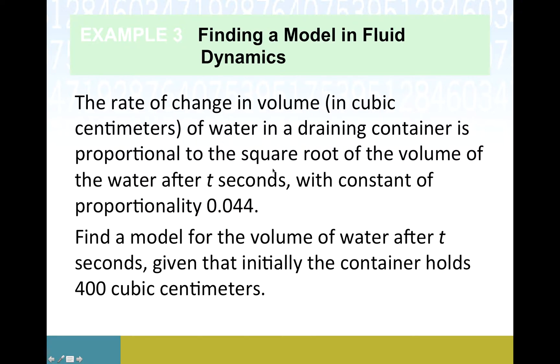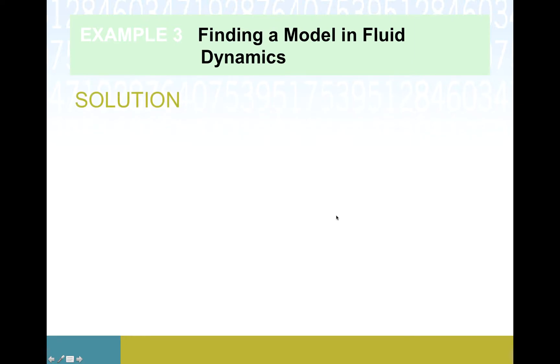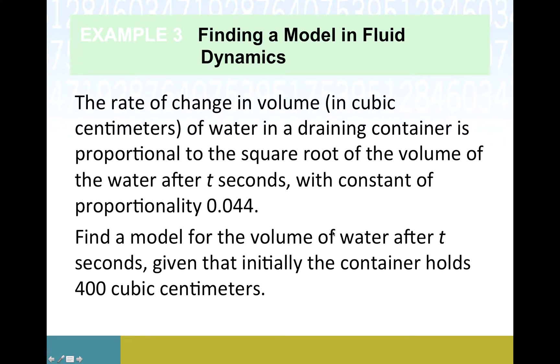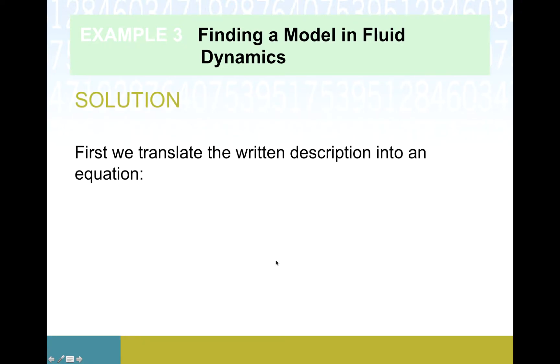Our task is to find a model for volume of water given that initially the container holds 400 cubic centimeters. Maybe just a historical note, this proportional to the square root is not made up. This is often referred to as Torricelli's Law. If you just have a bucket and you poke a hole in the bottom, initially when the volume is high, then the water drains faster and then it drains a little bit slower as the volume gets lower.